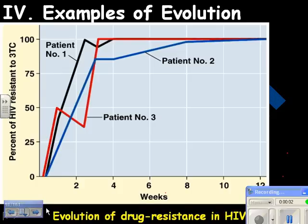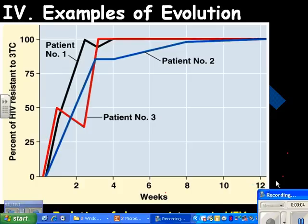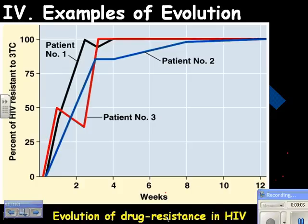Examples of evolution. This is a graph that shows the evolution of drug resistance in HIV. There are three patients. Patient 1 is the black line, patient 2 is the blue line, and patient 3 is the red line. This shows the percent of HIV — the virus — resistant to a drug called 3TC.